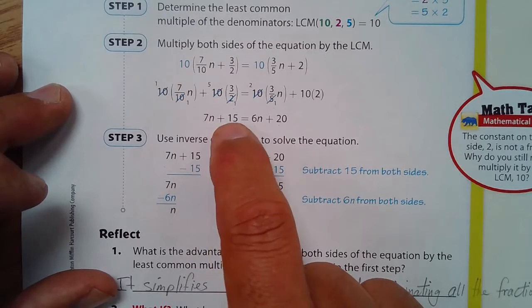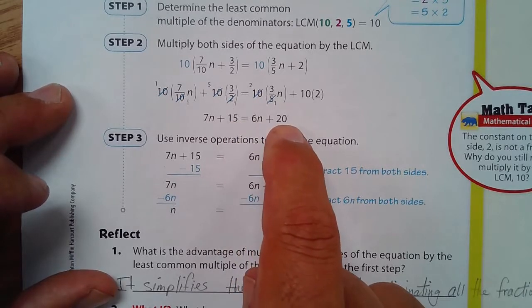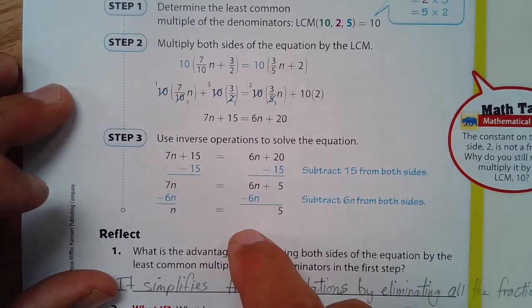They would be twice the size. That would be 14n, that would be 30, that would be 12n, and that would be 40. And you'll still get the same answer. You're just dealing with larger numbers.